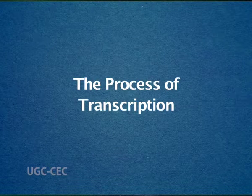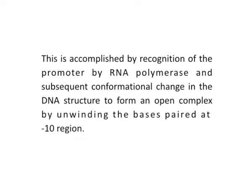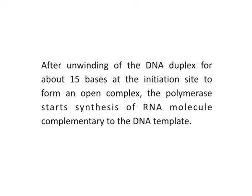Now let us understand the actual process of transcription. The process of transcription can be divided into three overlapping stages called initiation, elongation, and termination. In initiation, RNA polymerase uses only one strand of the DNA as template to synthesize a complementary strand. In order to access the template strand, there is a need to unwind the DNA double helix. This is accomplished by recognition of the promoter by RNA polymerase and subsequent conformational changes in the DNA structure to form an open complex by unwinding the bases paired at the minus 10 region. After unwinding of the DNA duplex for about 15 bases at the initiation site, the polymerase starts synthesis of an RNA molecule complementary to the DNA template.